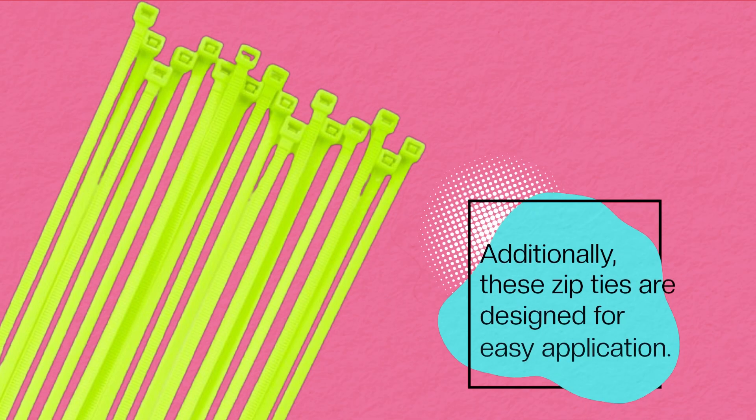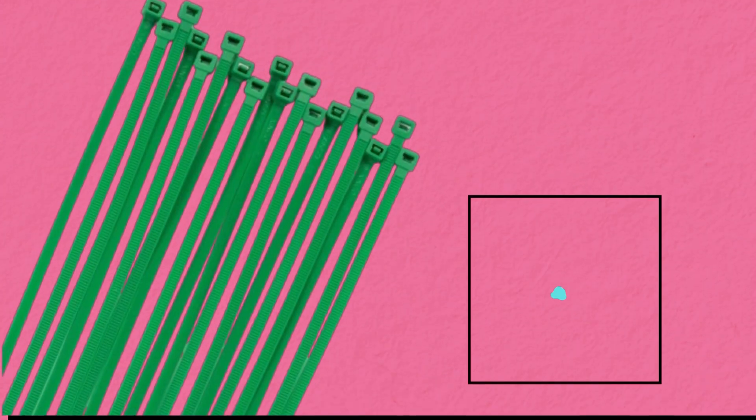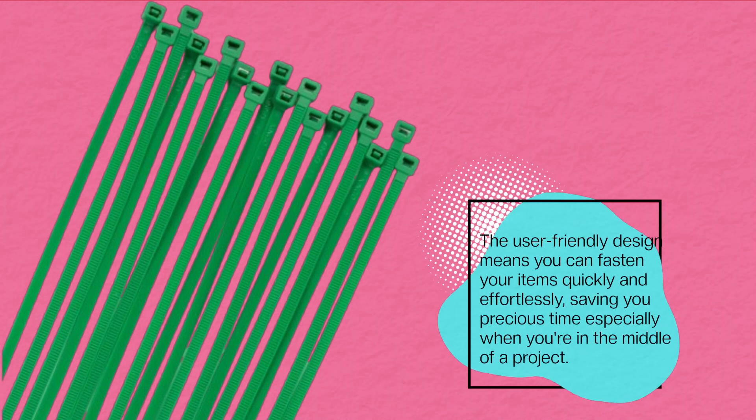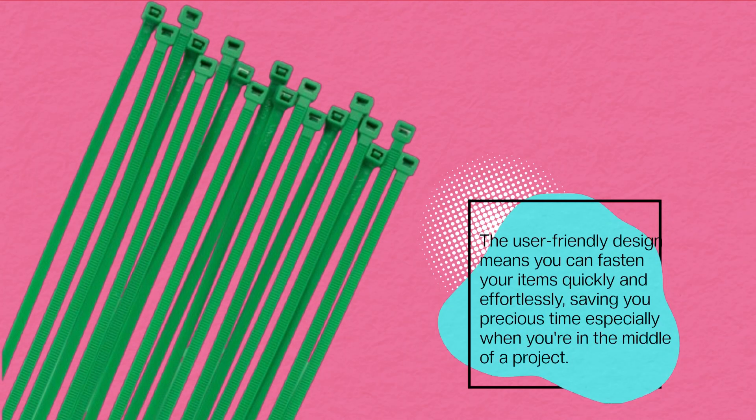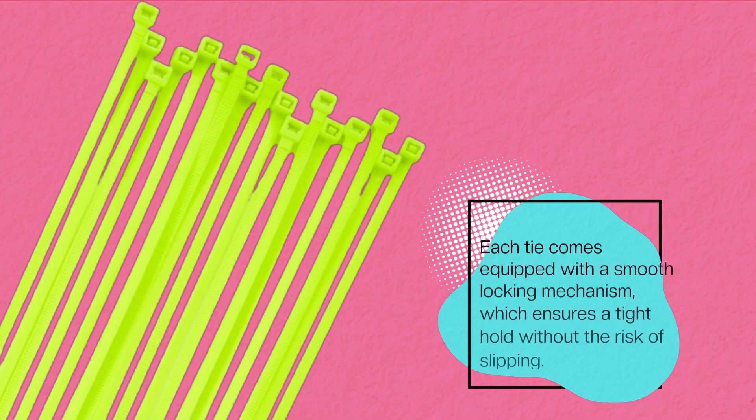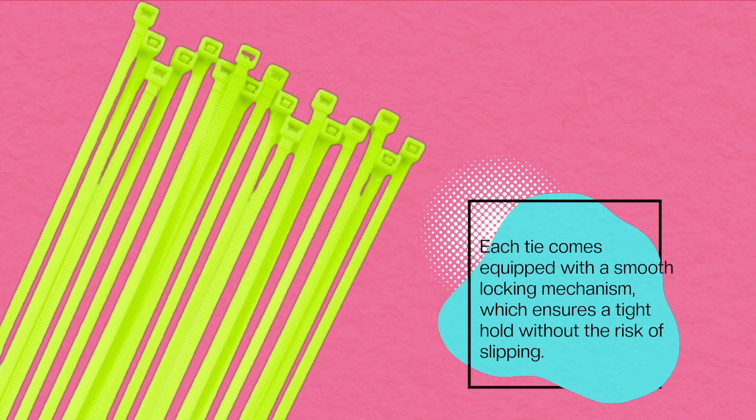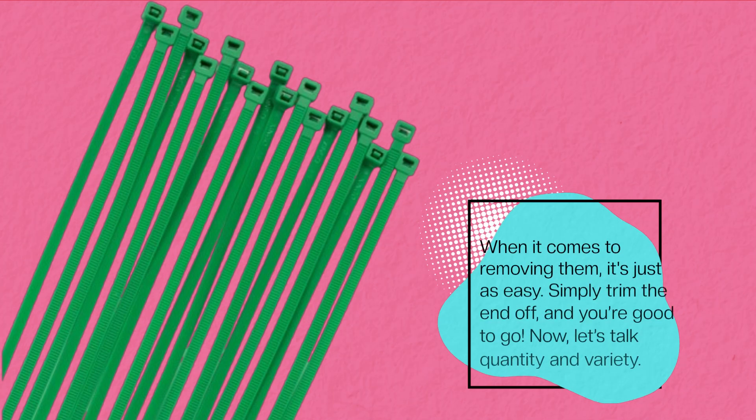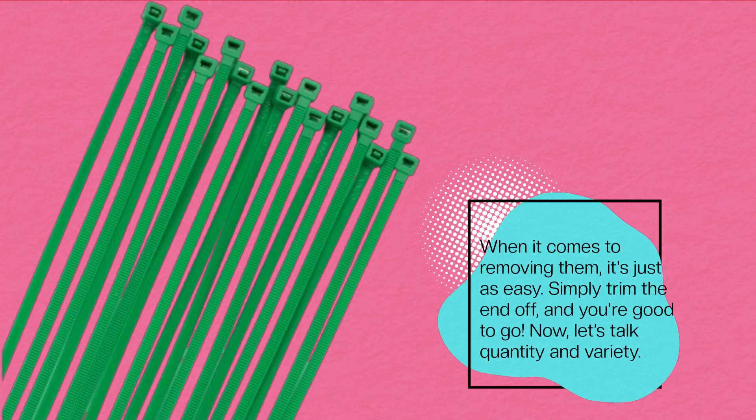Additionally, these zip ties are designed for easy application. The user-friendly design means you can fasten your items quickly and effortlessly, saving you precious time especially when you're in the middle of a project. Each tie comes equipped with a smooth locking mechanism, which ensures a tight hold without the risk of slipping. When it comes to removing them, it's just as easy. Simply trim the end off, and you're good to go.